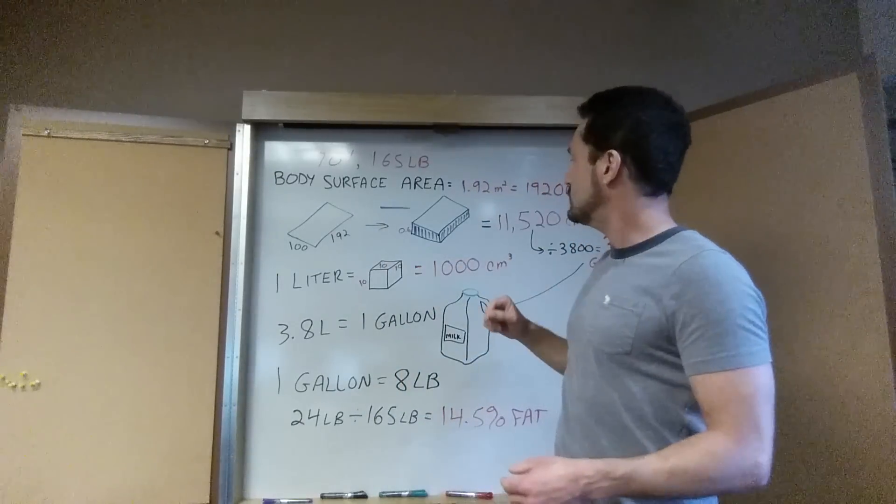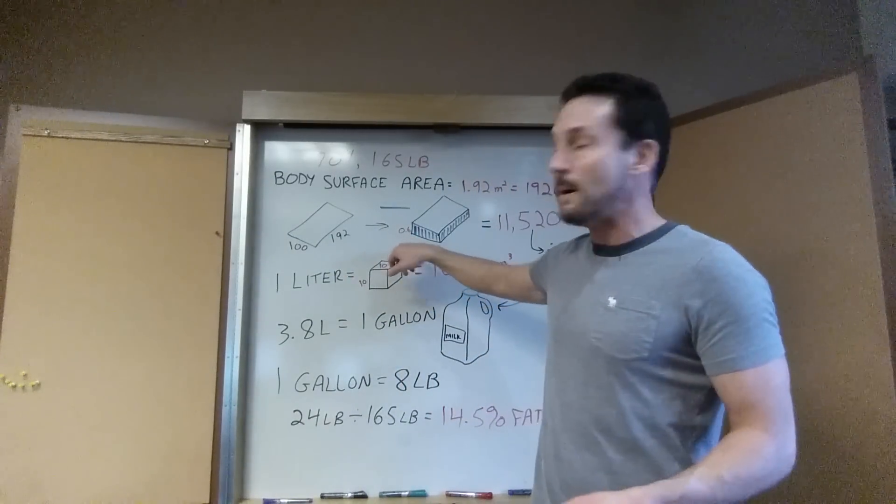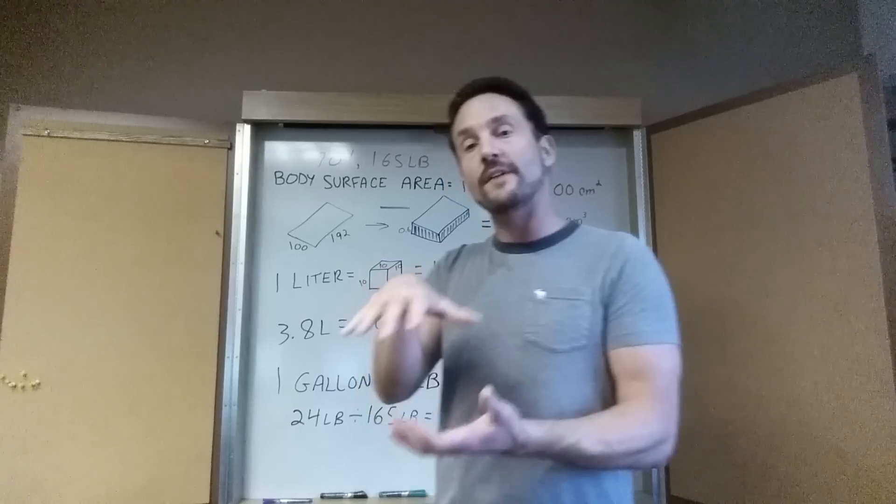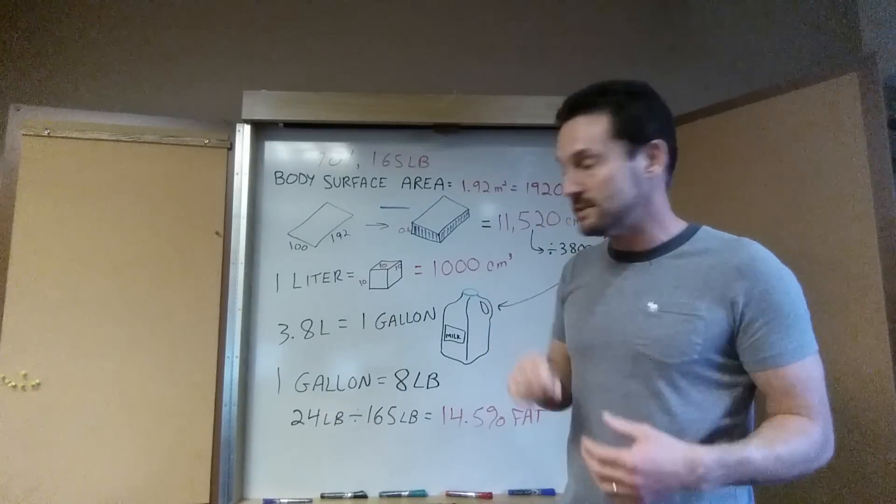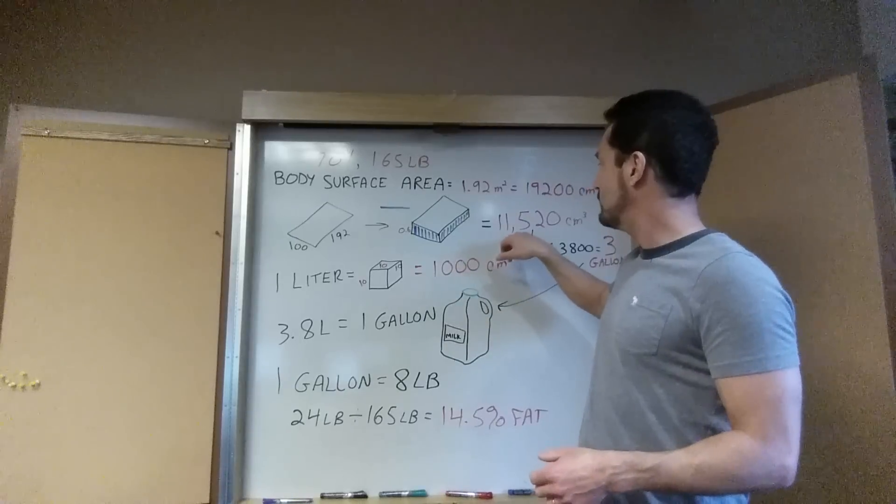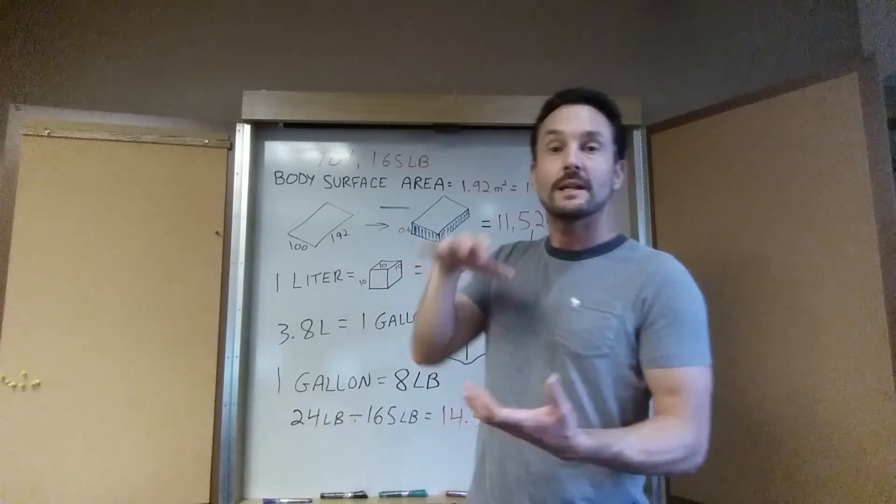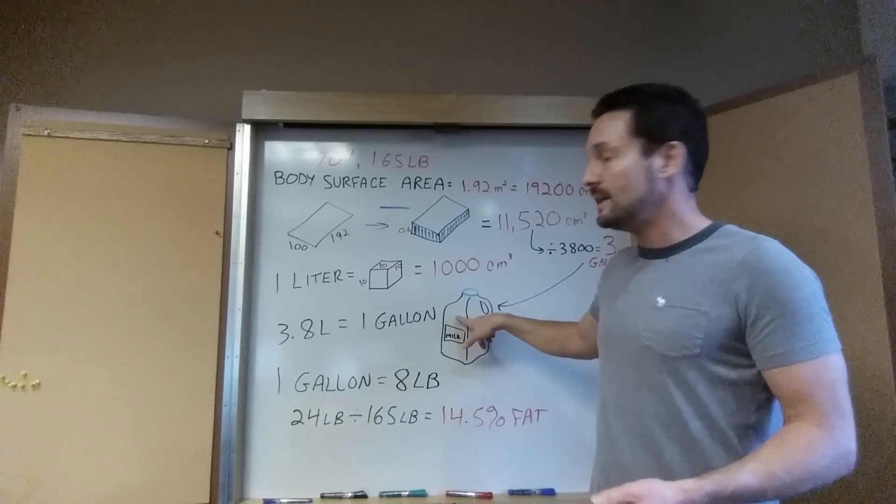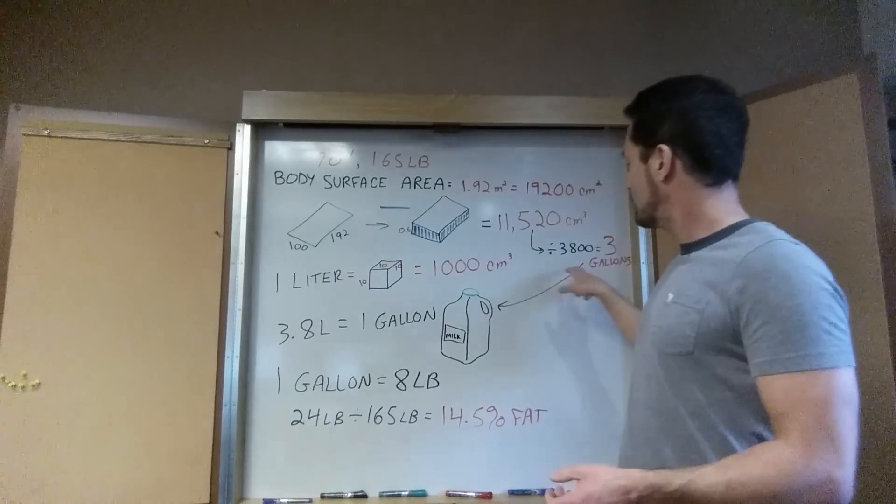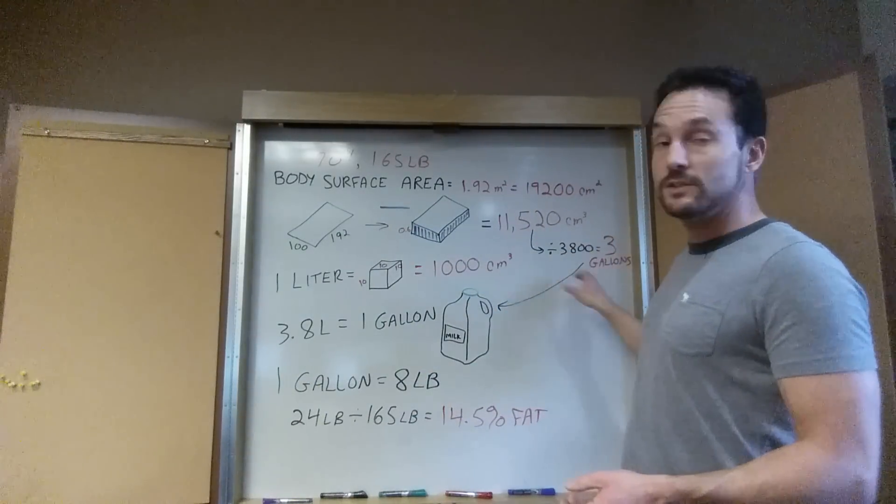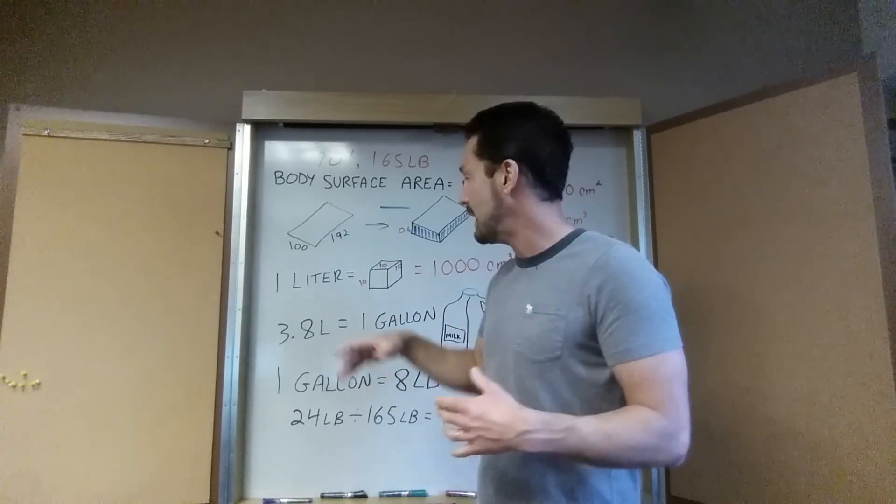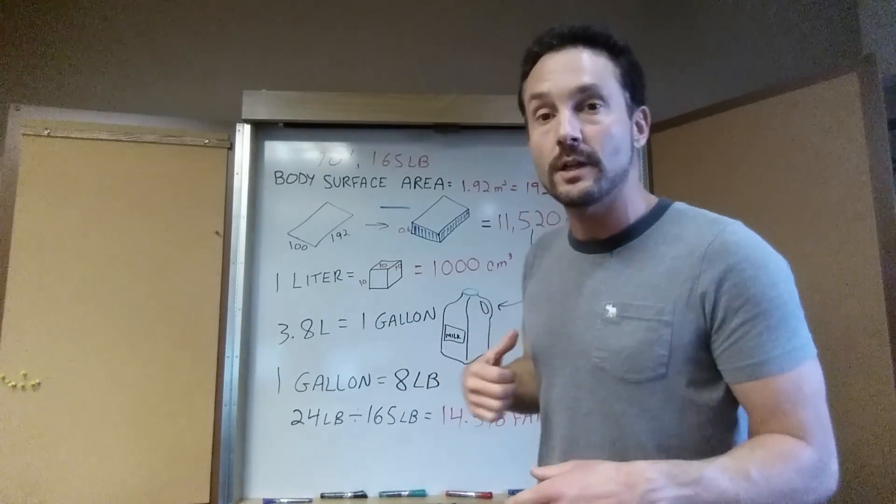So I took 19,200 times 0.6 and it came up with 11,520 centimeters cubed or volume of 11.5 liters of fat or thickness of fat. One liter is a thousand cubic centimeters so that's 11,500 that's very easy 11.5 liters of fat. A gallon is 3.8 liters so your gallon jug weighs about 8 pounds is 3.8 liters so 3.8 into 11.5 is almost exactly 3 gallons. And I said there's no way in the world I could carry 3 gallons of fat but at 6 millimeters thick that's actually what the calculation is.